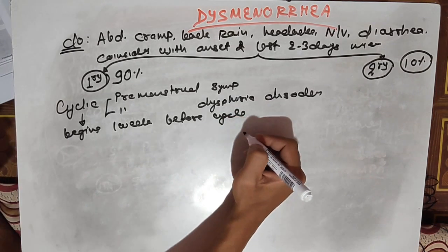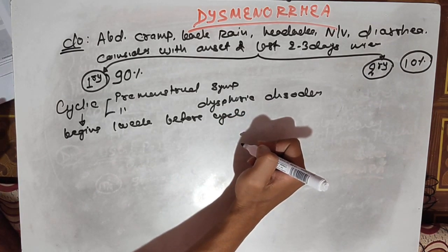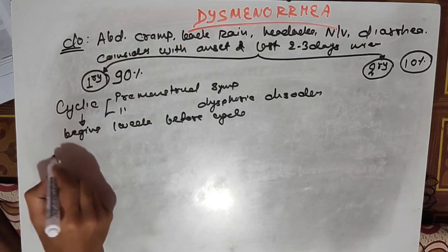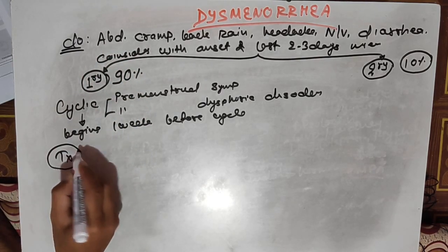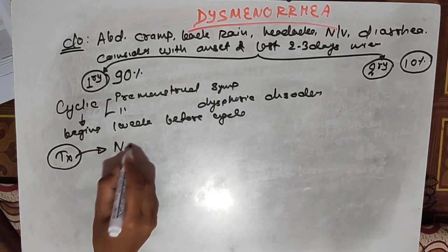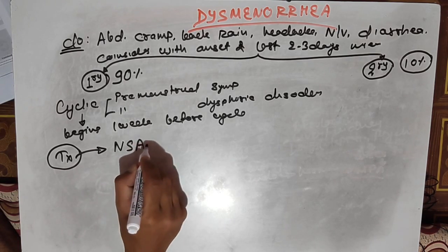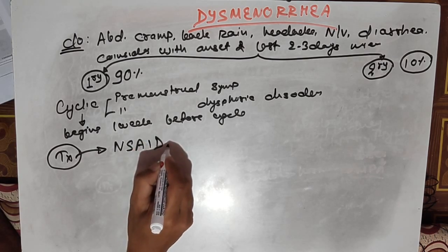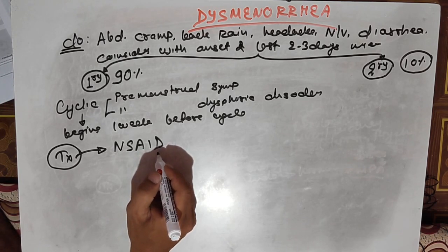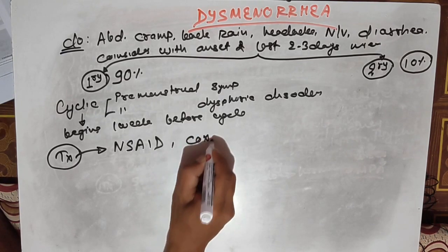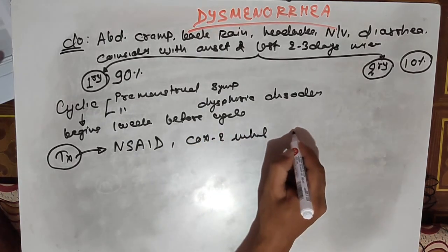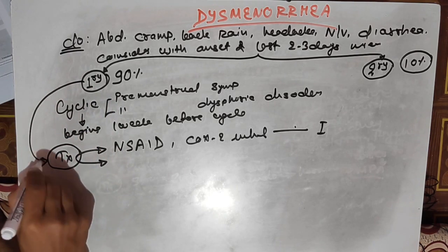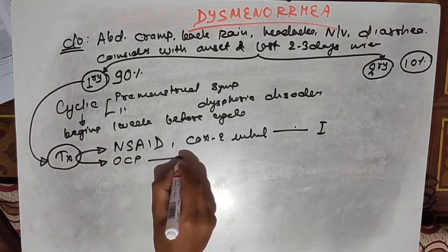Primary dysmenorrhea is treated symptomatically. Since patients are suffering from pain, we prescribe NSAIDs or COX-2 inhibitors as first-line treatment. The second line of treatment for primary dysmenorrhea is oral contraceptive pills.